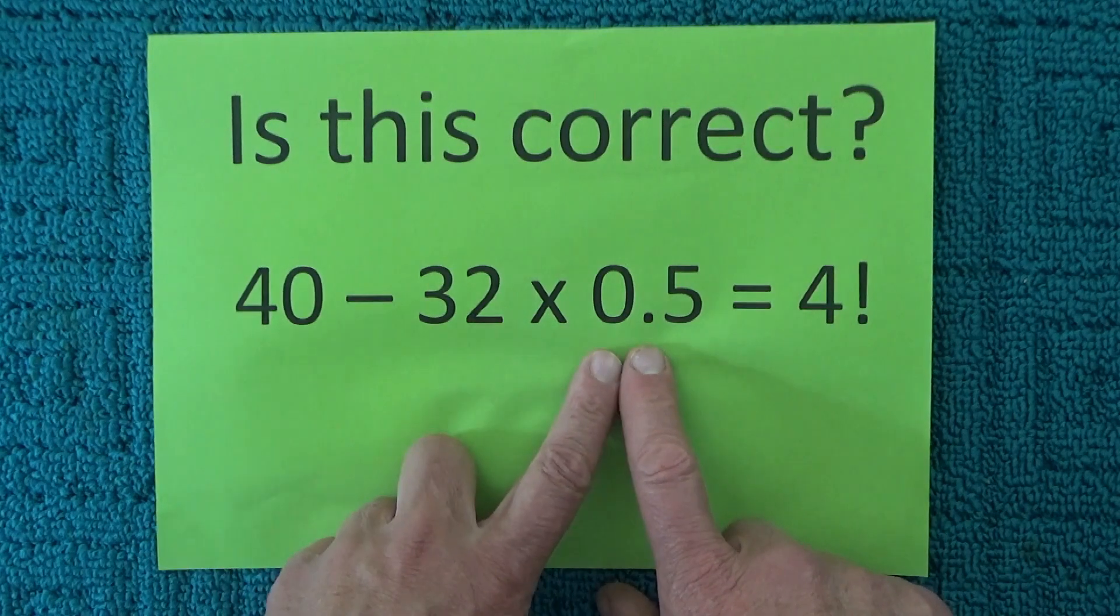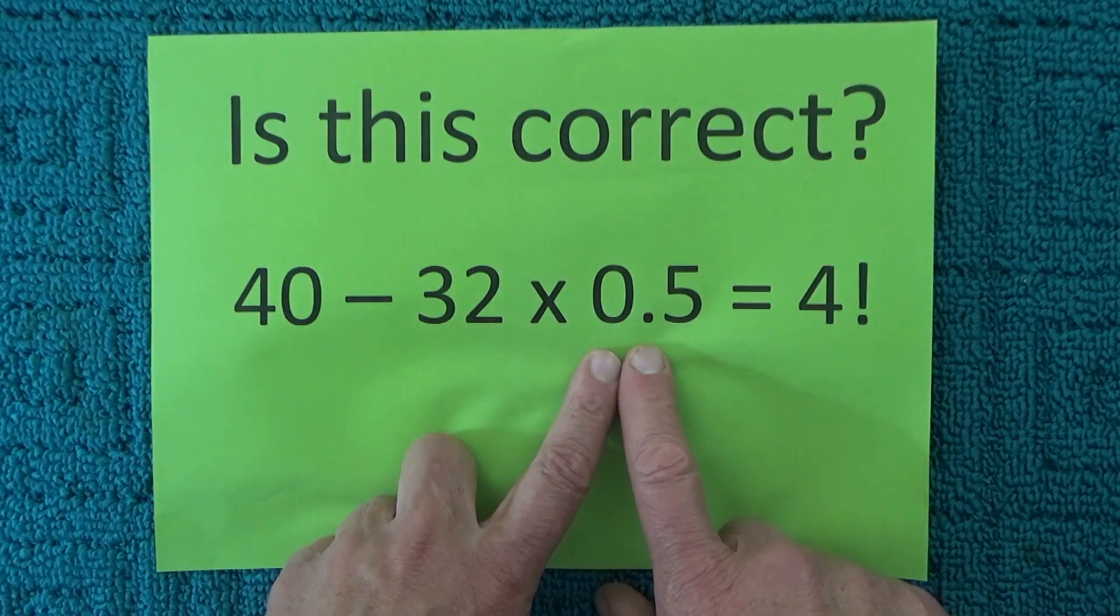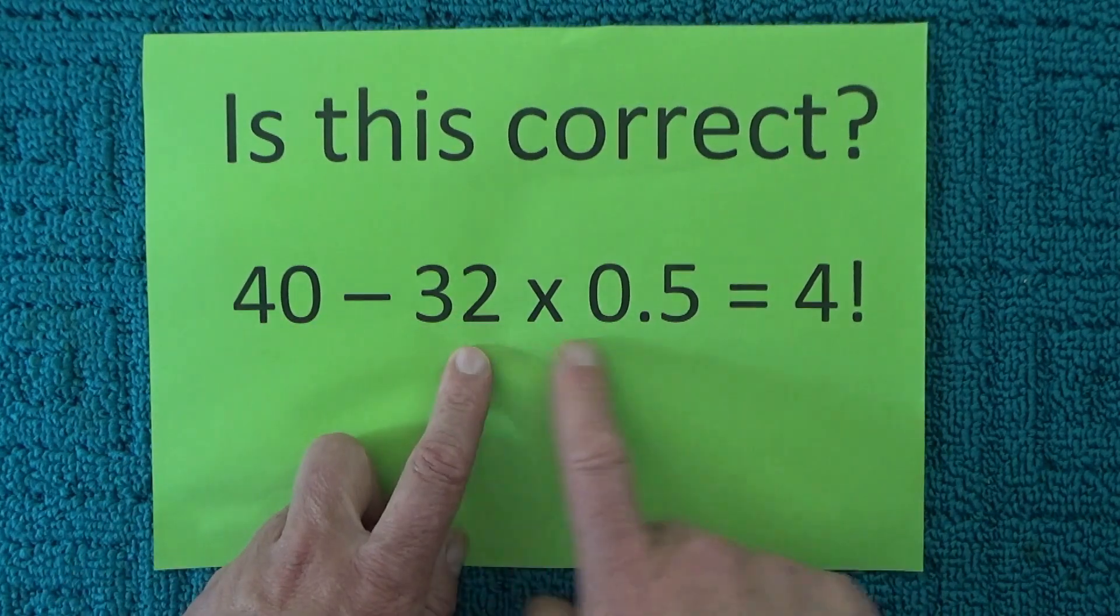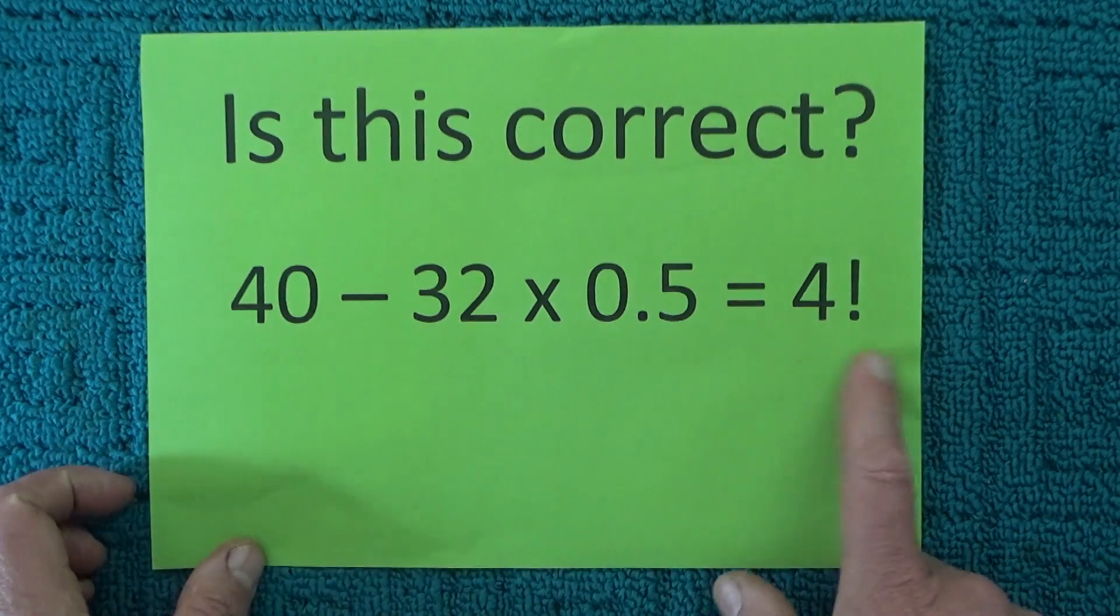So you really need to do 32 times 0.5, which is 16, and then 40 minus 16 equals 24. But when I looked at it a little bit more closely...